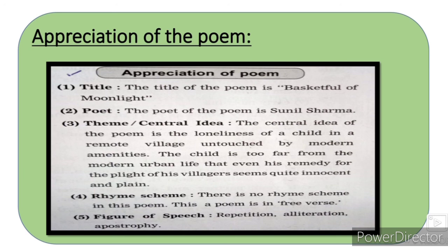یعنی بچہ گاؤں میں اکیلا ہے، modern amenities سے untouched ہے، اور جدید urban life سے بھی بہت دور ہے۔ اپنے گاؤں والوں کے لیے جو حل نکالنا چاہتا ہے اس میں بھی معصومیت ہے۔ Rhyme scheme: 'There is no rhyme scheme in this poem — this is a poem of free verse.' Figures of speech جیسے کہ repetition، alliteration، apostrophe استعمال ہوئی ہیں — اس طریقے سے یہ activity مکمل ہوئی۔